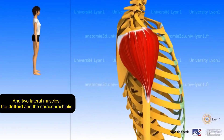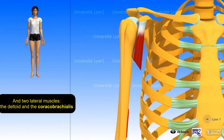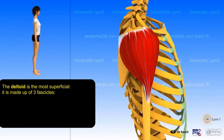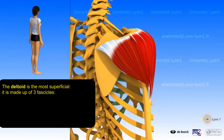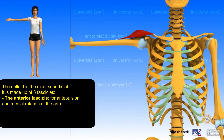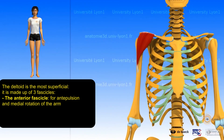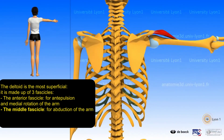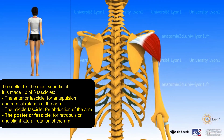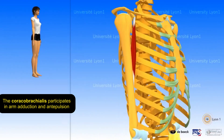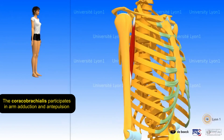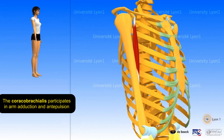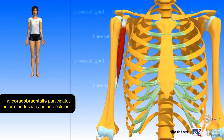Finally, there are two lateral muscles: the deltoid and the coracobrachialis. The deltoid is the most superficial, made up of three fascicles — the anterior fascicle for antipulsion and medial rotation of the arm, the middle fascicle for abduction of the arm, and the posterior fascicle for retropulsion and slight lateral rotation. The coracobrachialis participates in arm adduction and antipulsion.